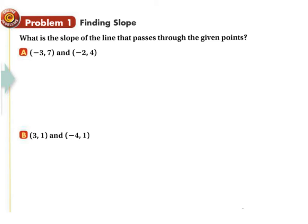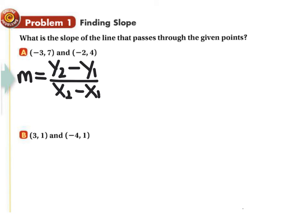In order to calculate the slope of a line given two points, you plug them into the slope formula: m equals y2 minus y1 over x2 minus x1. We have to choose from the original points what we're going to call them. I'm going to call the first point x1 and y1, and the second set of points x2 and y2. Now I'm going to substitute this into the equation.